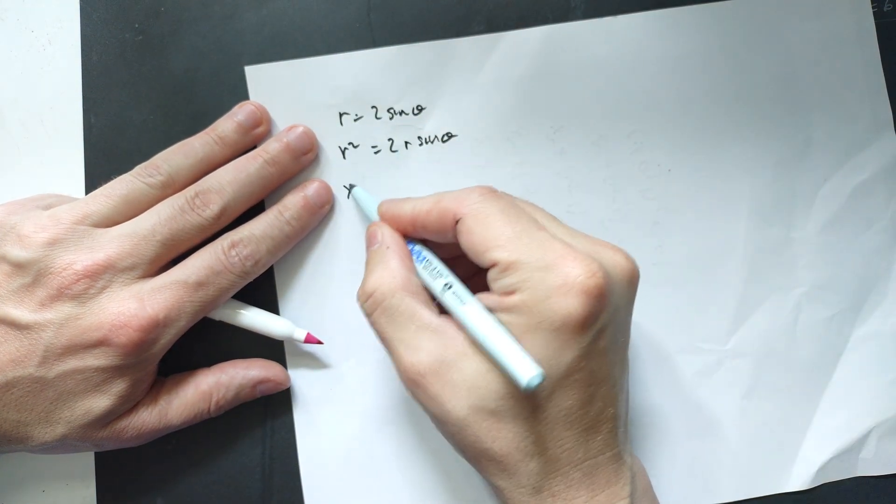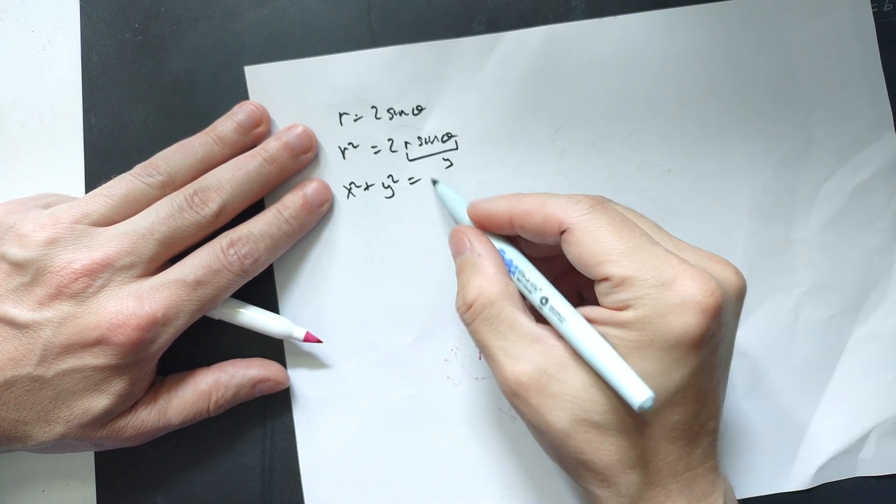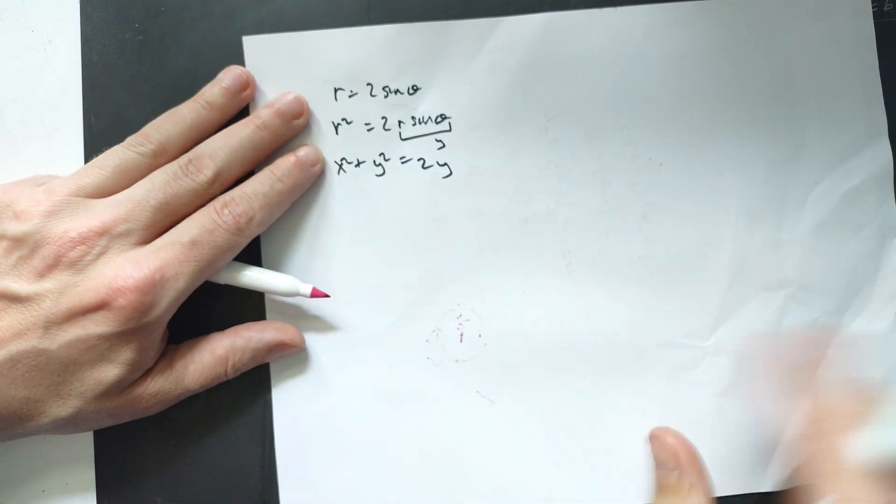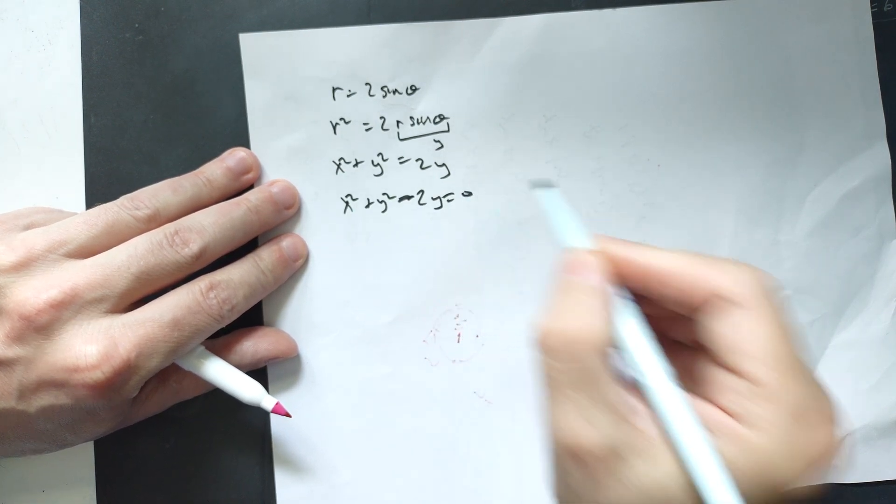And then we write this as X squared plus Y squared equals, now this here is equal to Y, so it's 2Y. And then just shift it over, so X squared plus Y squared minus 2Y equals 0.